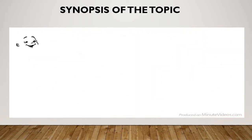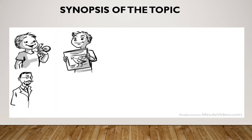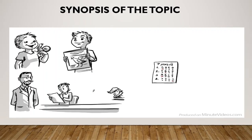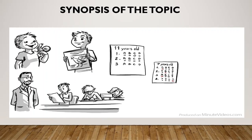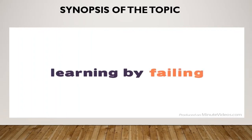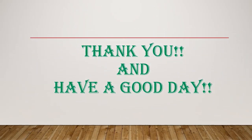Jean Piaget's first interests were animals, and he published his first scientific paper on albino sparrows in 1907 when he was just 11 years old. In 1920 he began working with standardized intelligence tests. He realized that younger children consistently make types of mistakes that older children do not, concluded that they must think differently, and spent the rest of his life studying the intellectual development of children. That ends our report — thank you and have a good day. Goodbye.